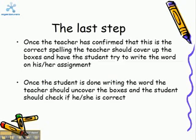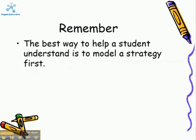The last step: once the teacher has confirmed that this is the correct spelling, the teacher should cover up the boxes and have the student try to write the word in his or her assignment beneath. Once the student is done writing the word, the teacher should uncover the boxes and the student should check if he or she is correct. Remember, the best way to help a student understand is to model a strategy first.